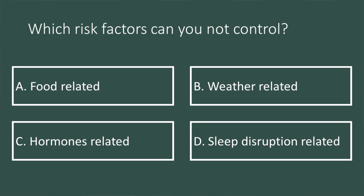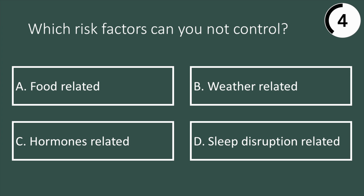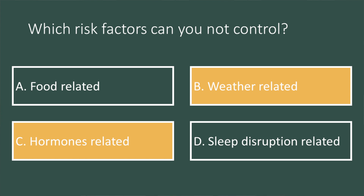Quiz of the day: which of the following risk factors can you not or hardly control? Food-related (Answer A), weather-related (Answer B), hormones-related (Answer C), or sleep-disruption-related (Answer D)? The correct answers are B — weather risk — and C — hormones risk. Sleep disruption risk can be mitigated with lifestyle-specific adjustments, and food-related risk can be avoided or mitigated following a migraine-specific program such as the Good Days program.